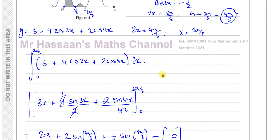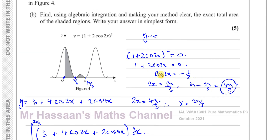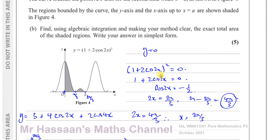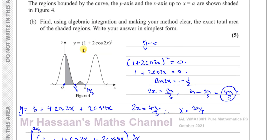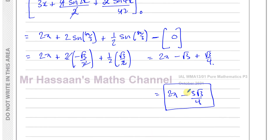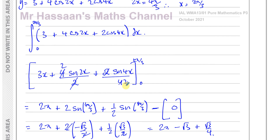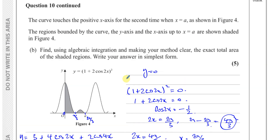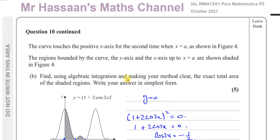So the exact total area of the shaded regions is 2π − 3√3/4 square units. That is the answer to question 10 part b, completing the full P3 October 2021 paper.